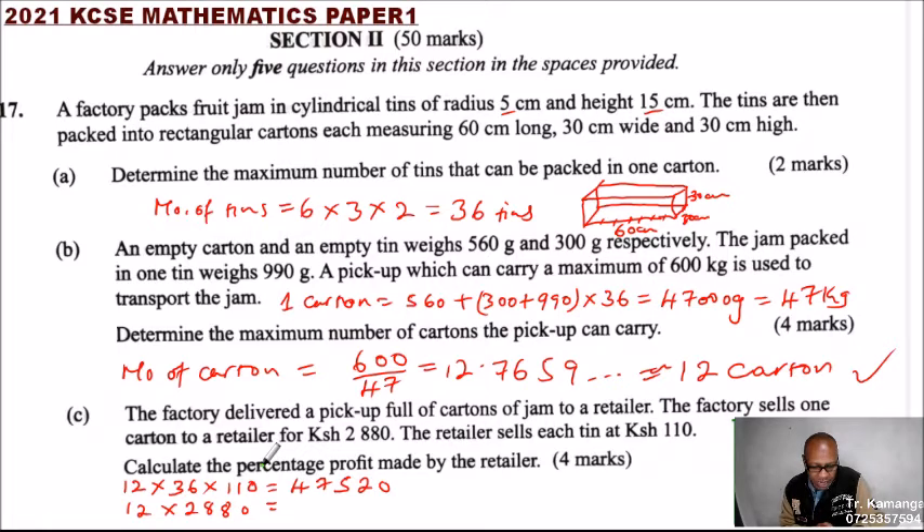So to get the difference, you say 47,520 minus 34,560. That should give you 12,000—let's put that correctly—it is 12,960.